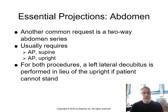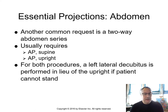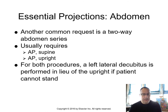Another common request is a two-way abdominal series — AP supine plus an upright AP. For both procedures, a lateral decubitus is performed instead of an upright if the patient cannot stand. Protocols vary by site — some include a left lateral decubitus in the three-way series, and others substitute it for the upright. Know the routine at your clinical site.